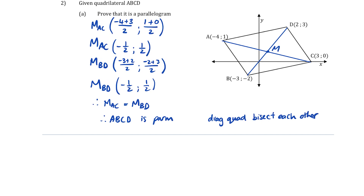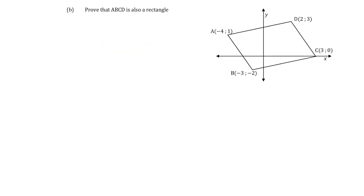If we didn't get the same midpoint for both diagonals, it's not a parallelogram — but since we do, it is. Question 2b: prove ABCD is also a rectangle. A rectangle is a special parallelogram with an interior angle of 90 degrees. In analytical geometry, to prove a 90-degree angle we look at gradients — we need the gradient of AB and the gradient of BC.